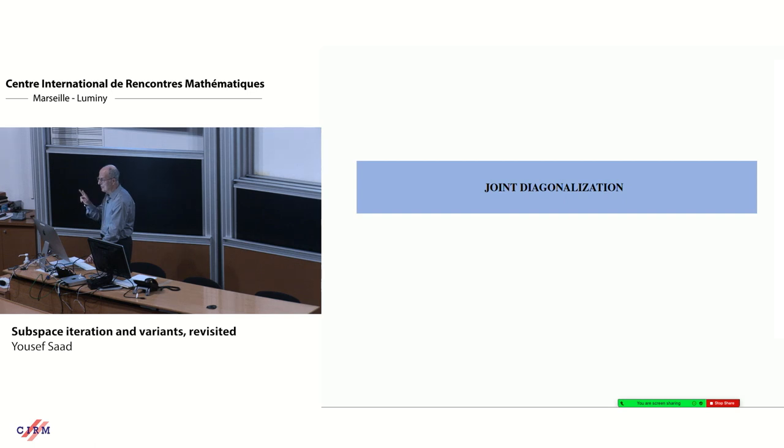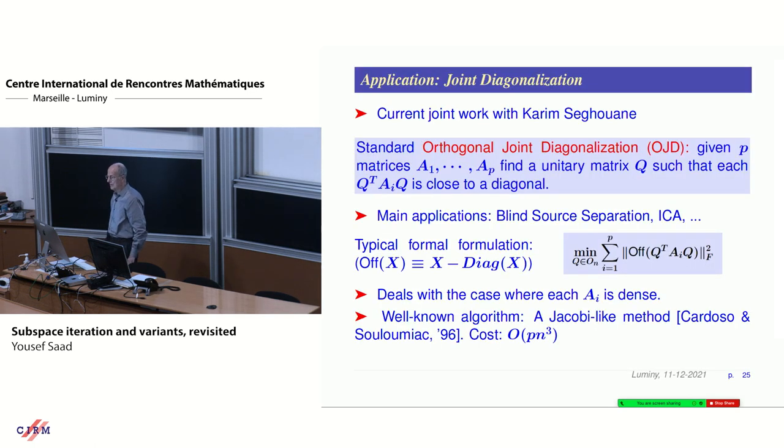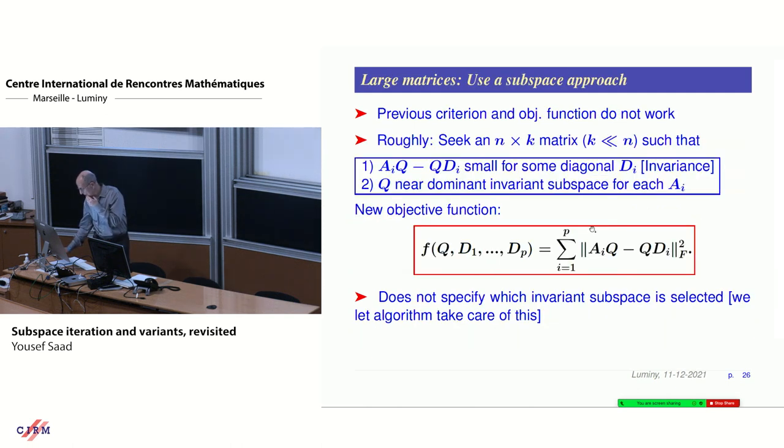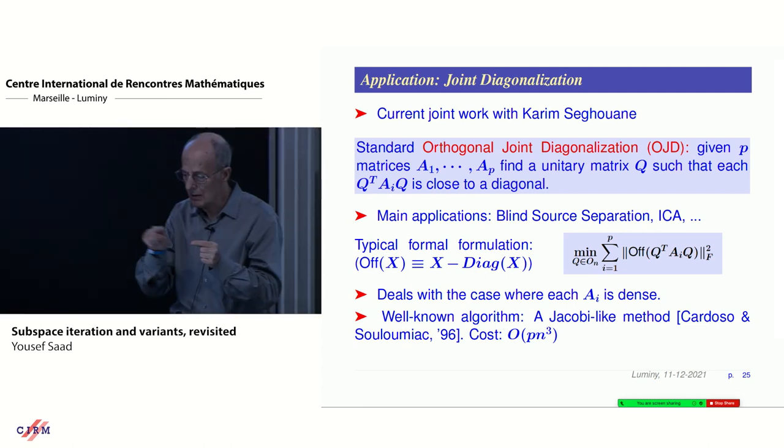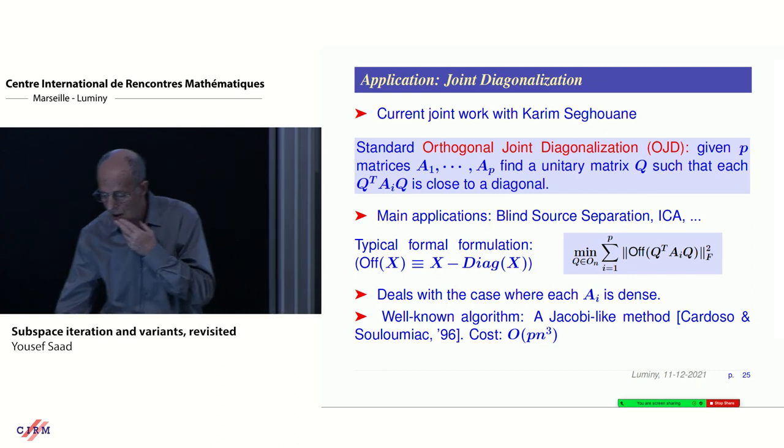This is a problem that's very important in signal processing. You have a set of matrices A1, A2, AP, and you want to find a unitary matrix Q such that each Q transpose AIQ is close to a diagonal. You're trying to diagonalize them at the same time. The standard problem, the AIs are dense. The classical algorithm used in this context is a Jacobi-like algorithm. You use rotations to eliminate the zeros for all the matrices. The cost is order P and Q.